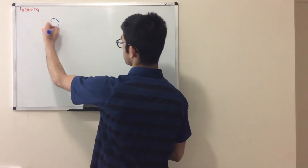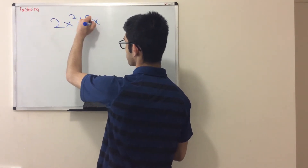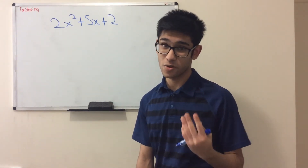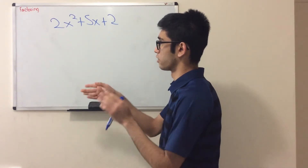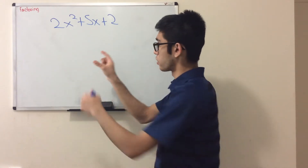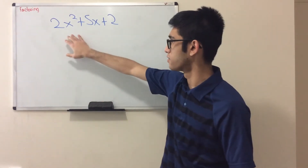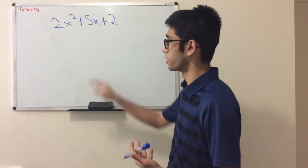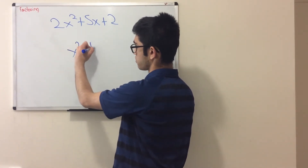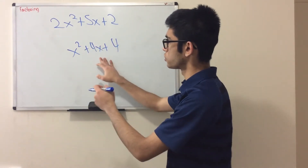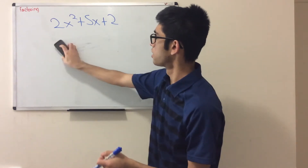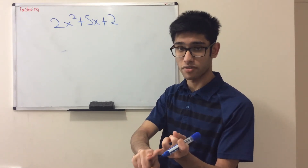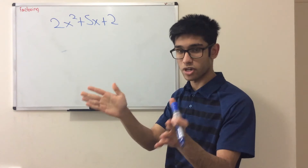Let's say you have 2x squared plus 5x plus 2. We already have a problem — there's no number I can divide 2, 5, and 2 by to get a clean factorable expression. There is no greatest common factor, and we can't use the simple method when the expression doesn't look like x squared plus something. So there's a trick for these cases.